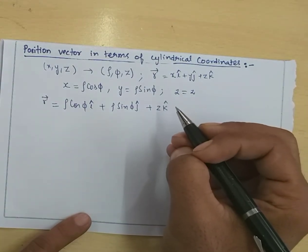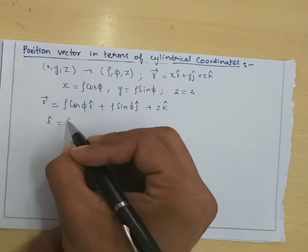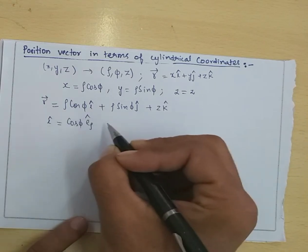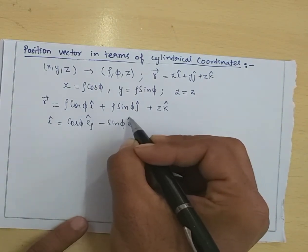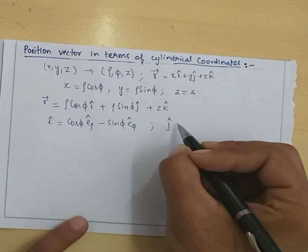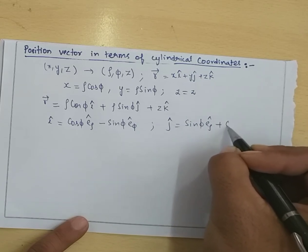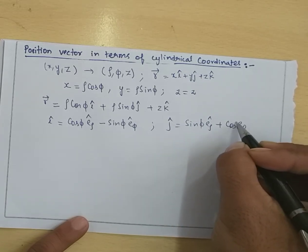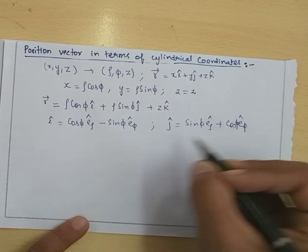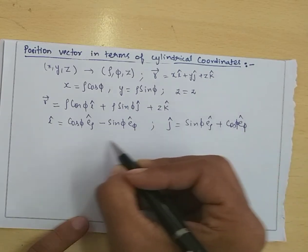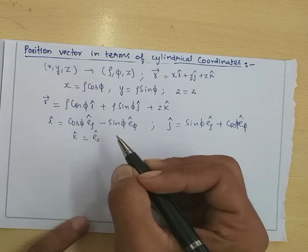We have previously derived that the unit vectors are: i-cap = cos(Phi)·E_rho-cap minus sin(Phi)·E_phi-cap, and j-cap = sin(Phi)·E_rho-cap plus cos(Phi)·E_phi-cap, and k-cap = E_z-cap.